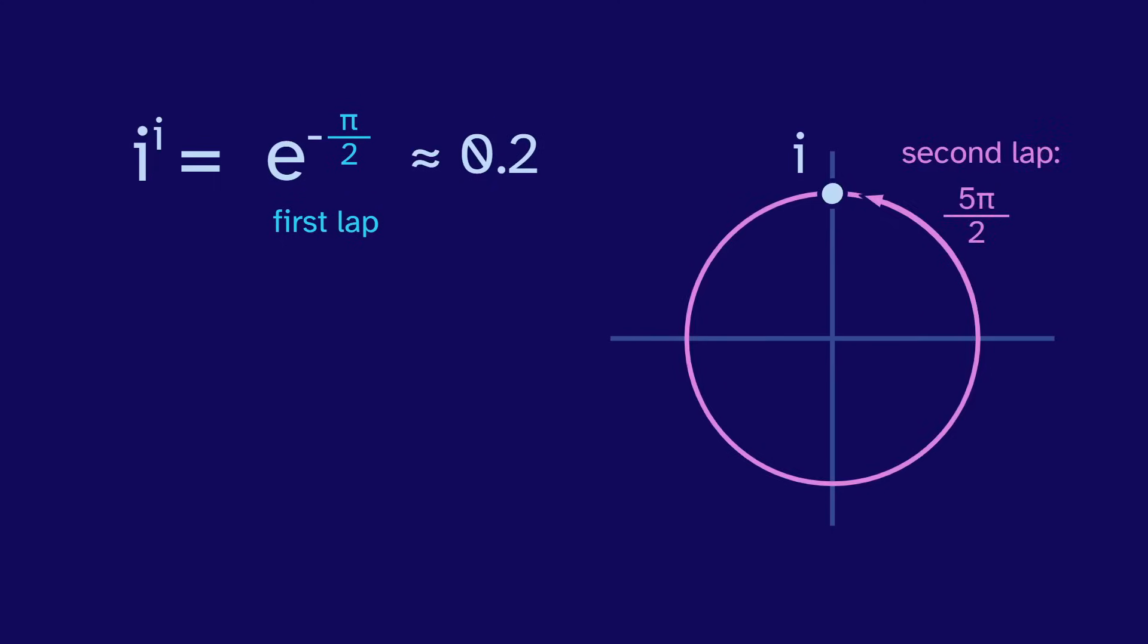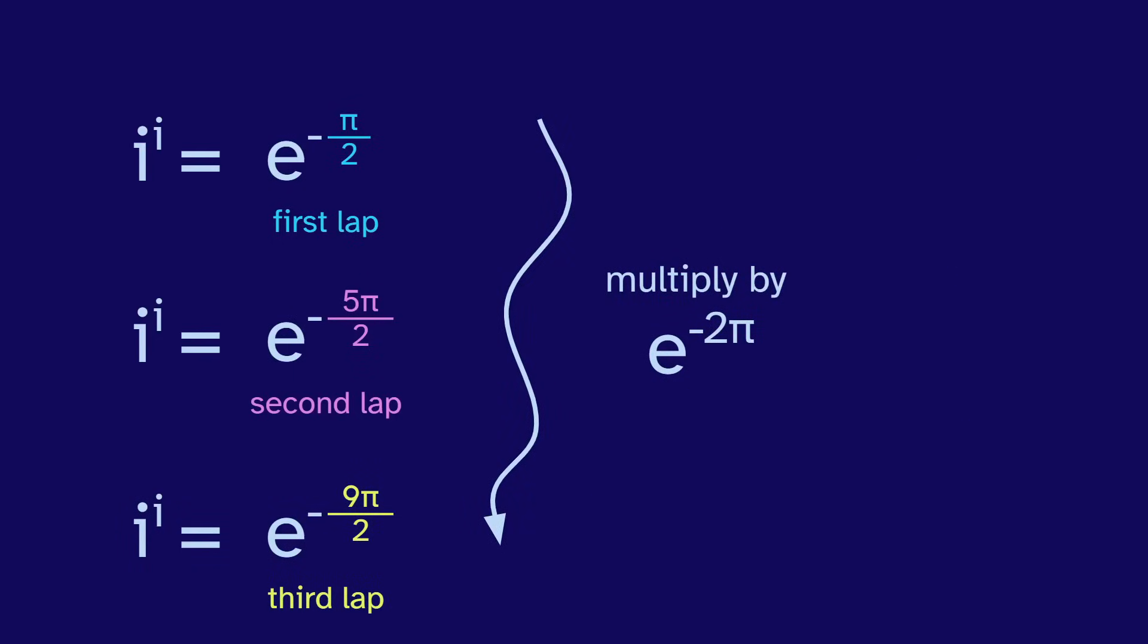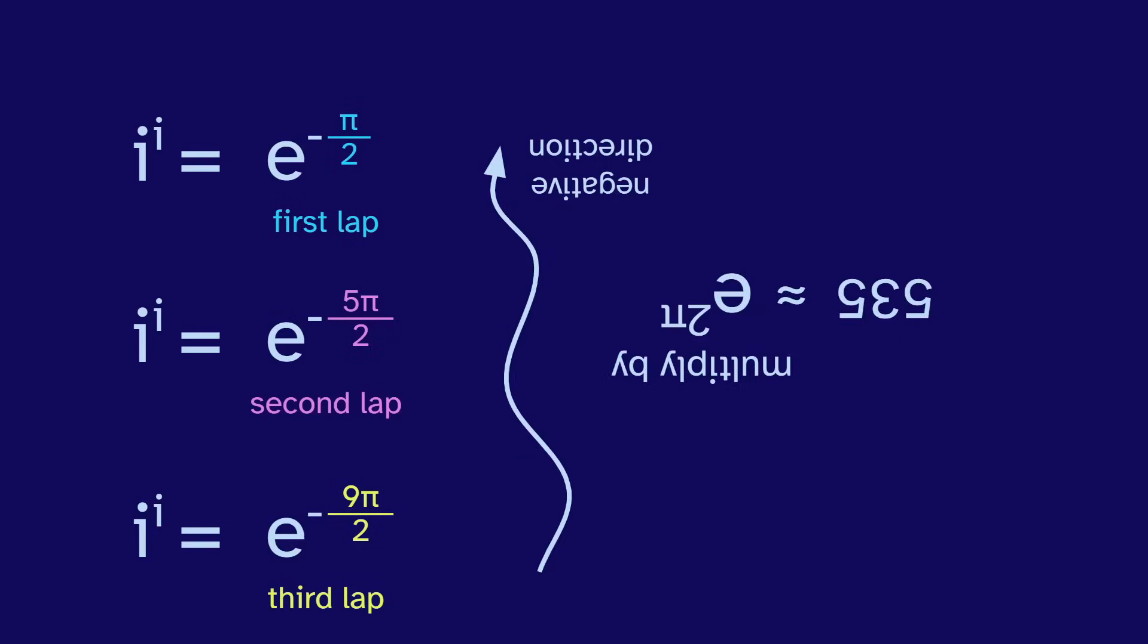But on the second lap, it has angle 5 pi over 2, which gives a result of e to the negative 5 pi over 2, about 0.0004. And the next lap gives a result of about, oh, that's a lot of zeros. Each lap, we multiply by e to the negative 2 pi, about 1 over 535. So in the positive direction, the numbers get smaller by this factor, and in the negative direction, they get larger.